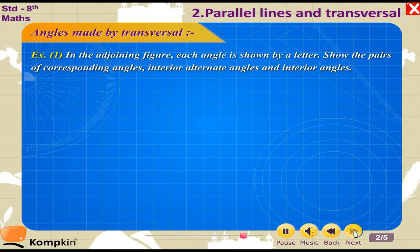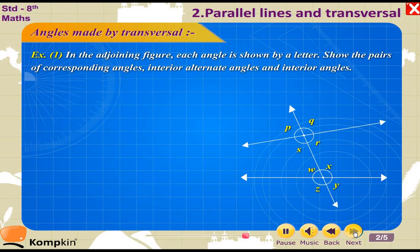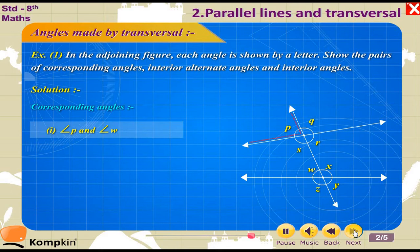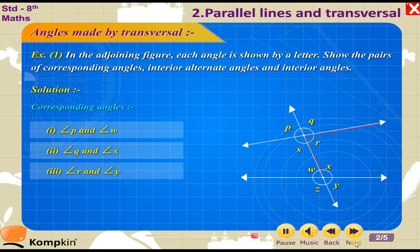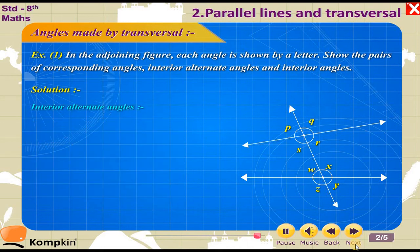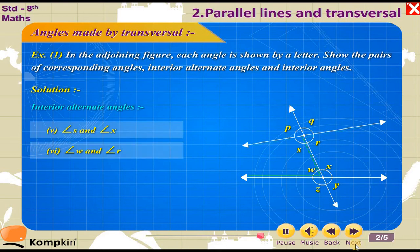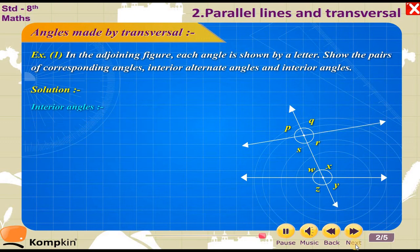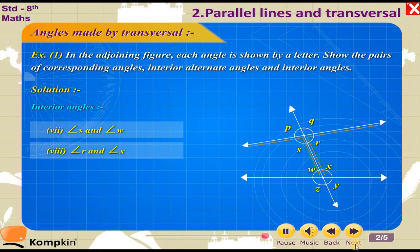Example 1. In the adjoining figure, each angle is shown by a letter. Show the pairs of corresponding angles, interior alternate angles, and interior angles. Solution — Corresponding angles: 1. Angle P and W; 2. Angle Q and X; 3. Angle R and Y; 4. Angle S and Z. Interior alternate angles: 5. Angle S and X; 6. Angle W and R. Interior angles: 7. Angle S and angle W; 8. Angle R and angle X.